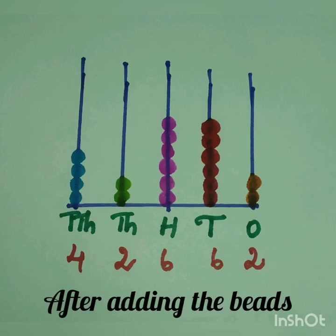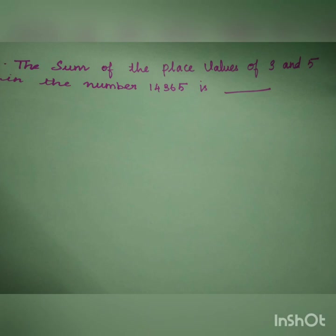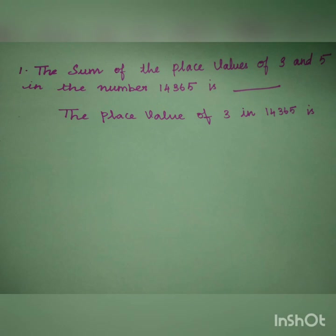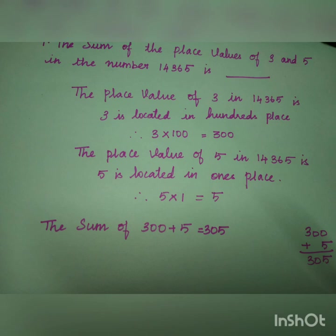Let's move on to the next question. The sum of the place value of 3 and 5 in the number 14,365 is? First, we should find the place value of 3 in 14,365. Here, 3 is located in 100s place, so 3 times 100 is 300. Same way, we find the place value of 5. Here, 5 is located in 1s place, so 5 times 1 is 5. To find the sum, we add the numbers: 300 plus 5 gives 305.